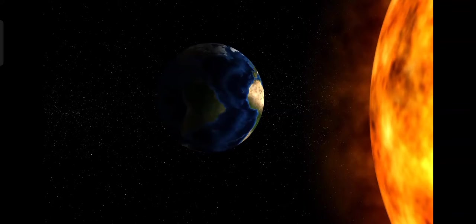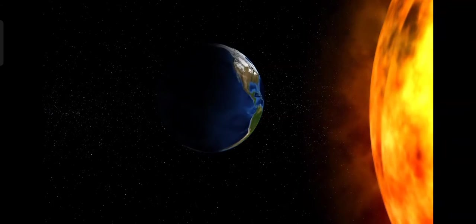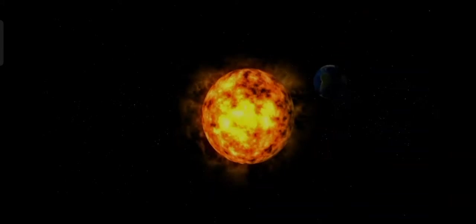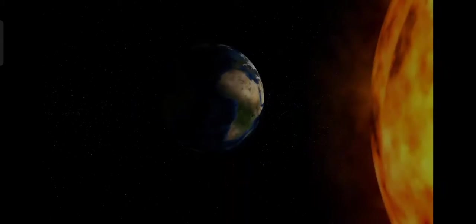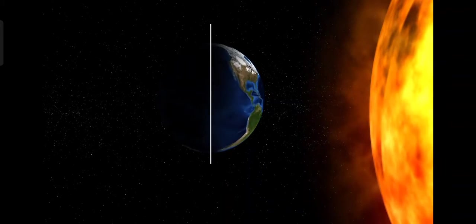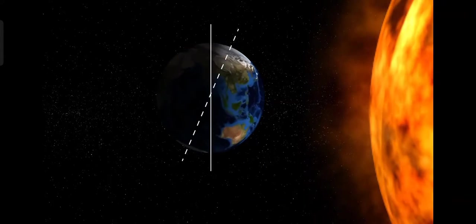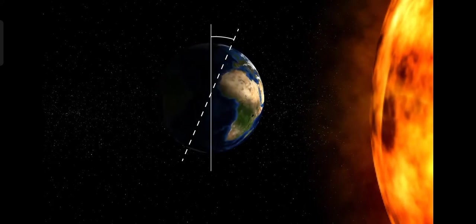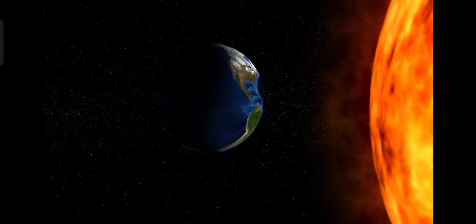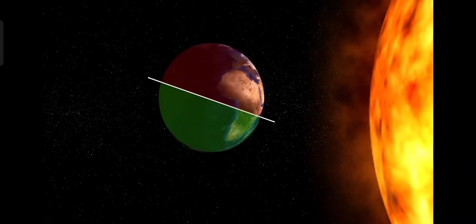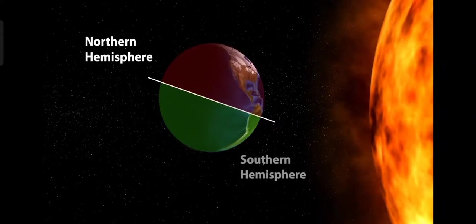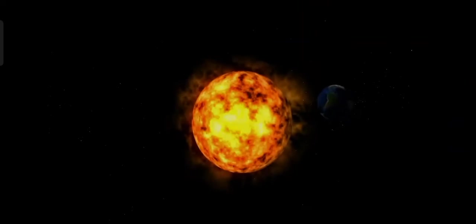Now we are going to see how seasons happen. We already know about the rotation of the Earth. There is another movement called revolution — the Earth revolves around the Sun. The Earth rotates on a tilted axis, and this tilted position causes the seasons. The Earth is divided into the Northern Hemisphere and the Southern Hemisphere.